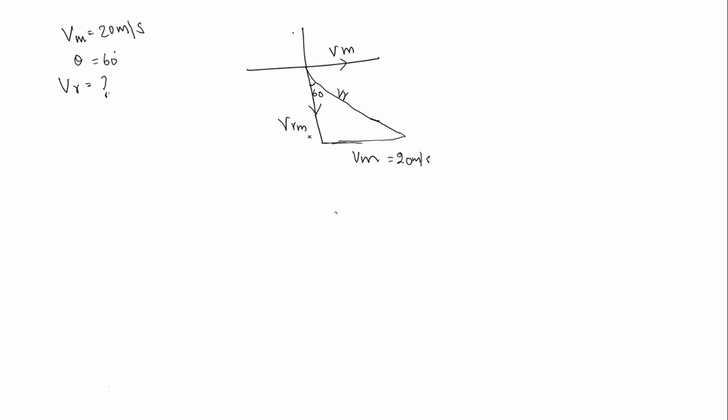From this, if we apply sin theta we will get the answer. So sin theta is equal to opposite side, that is velocity of man, by adjacent side, that is velocity of rain.